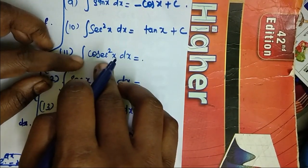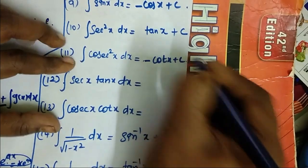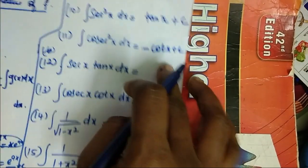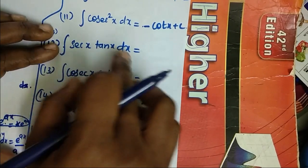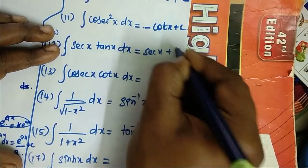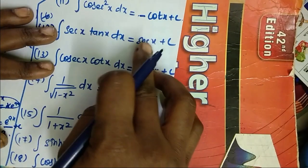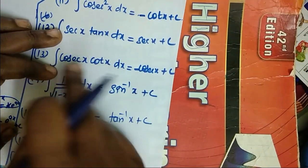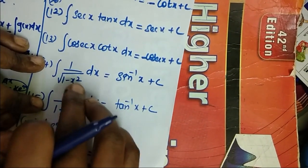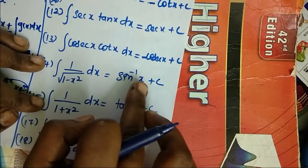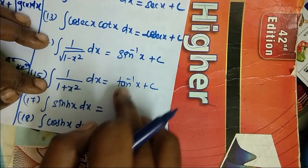We integrate sec x tan x to get sec x plus c. We integrate cosecant x cot x to get minus cosecant x plus c. Because we differentiate sec x to get sec x tan x; we differentiate cosecant x to get minus cosecant x cot x — so we have a minus. We integrate 1 over √(1 − x²) to get sin⁻¹(x). We integrate 1 over (1 + x²) to get tan⁻¹(x). We use these two repeated numbers.